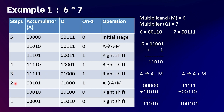In step 2, Q's least significant bit is 0 and Q minus one is 1, so we have the 0,1 case. We perform A plus M. The value of A is 11111 and M is 00110, giving a sum of 100101. We then perform an arithmetic right shift. Count is decremented from 2 to 1.